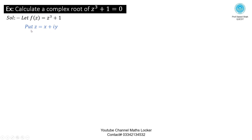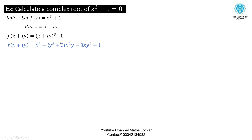Solution: Let f(z) = z³ + 1. z = x + i·y is the required root. Substituting in the equation in place of z, f(x + i·y) = (x + i·y)³ + 1.